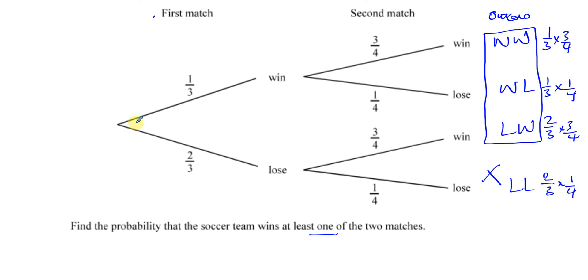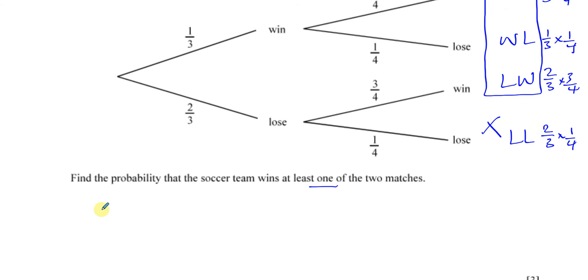So to find an outcome, you multiply along the branches. To combine outcomes, you add the separate outcomes. So instead of combining these outcomes by adding them together, I can do the one that doesn't fit minus one minus the one that doesn't fit, and it will give me those.